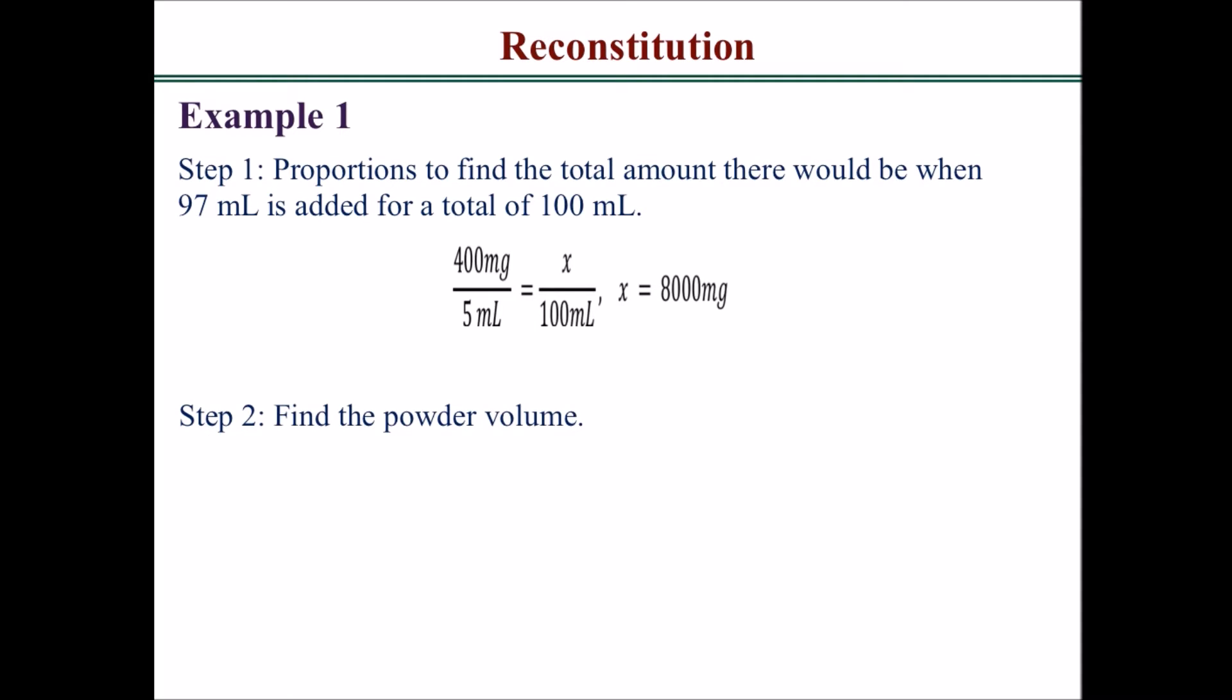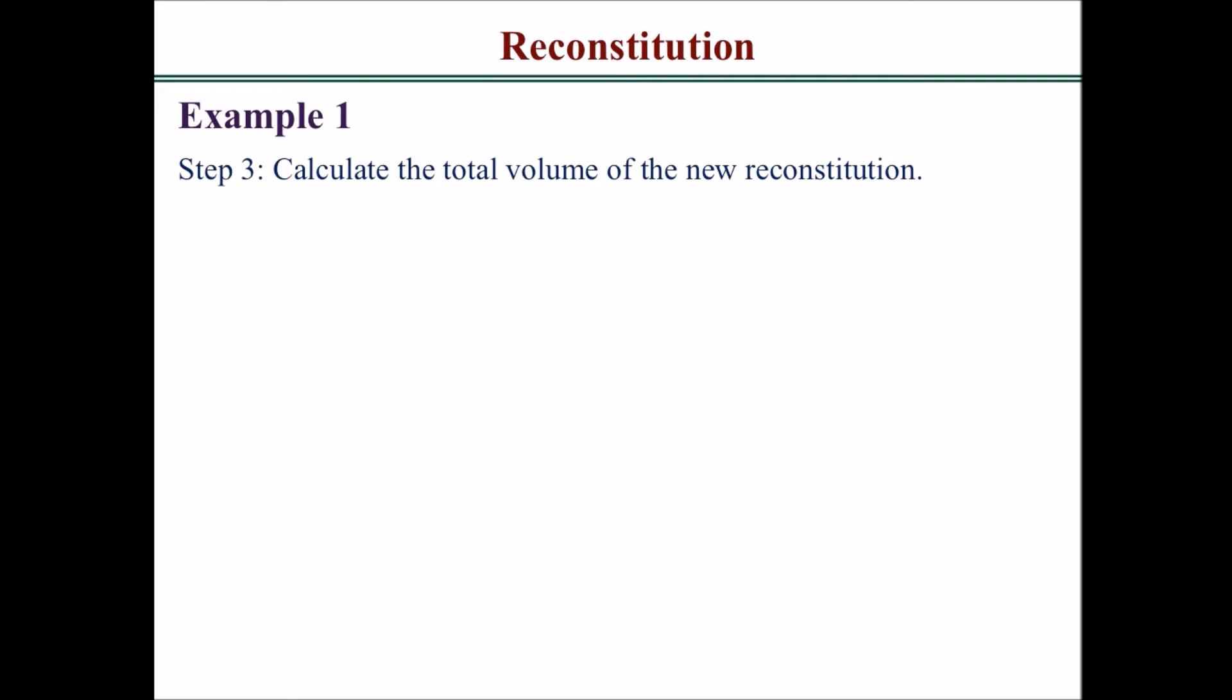Next, you want to find the powder volume. 100 milliliters minus 97 ml would get you 3 ml of powder volume. Next, you want to calculate the total volume of the new reconstitution.